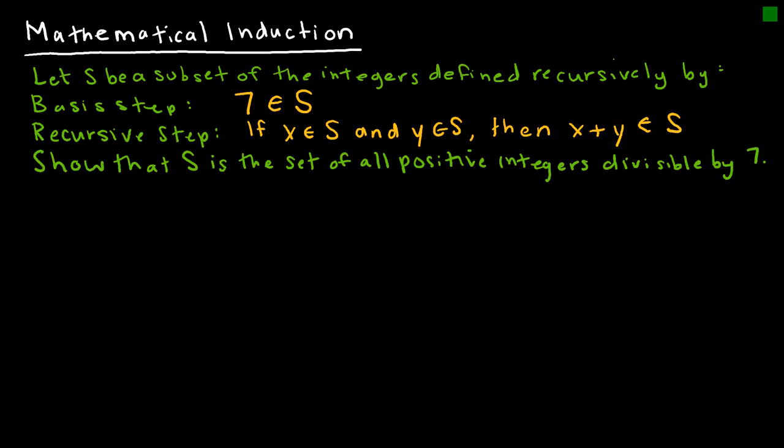I'm going to start with a proof by mathematical induction of an example we've already looked at together, where S is a subset of the integers defined recursively by the basis step that 7 is an element of S, and that if x is an element of S and y is an element of S, then their sum is also an element of S. My job is to show that S is actually equal to the set of all positive integers divisible by 7.